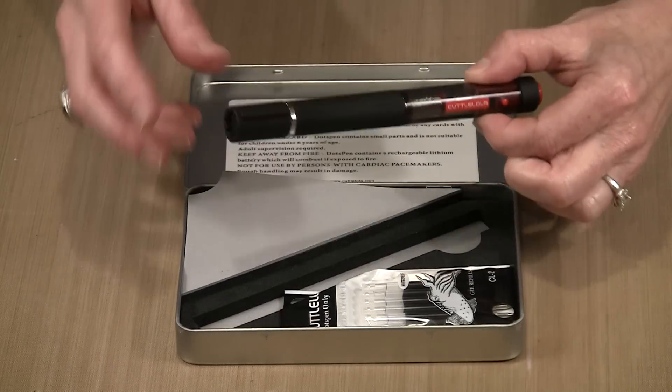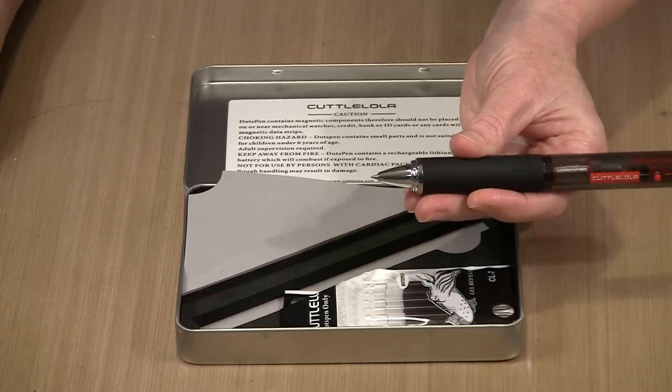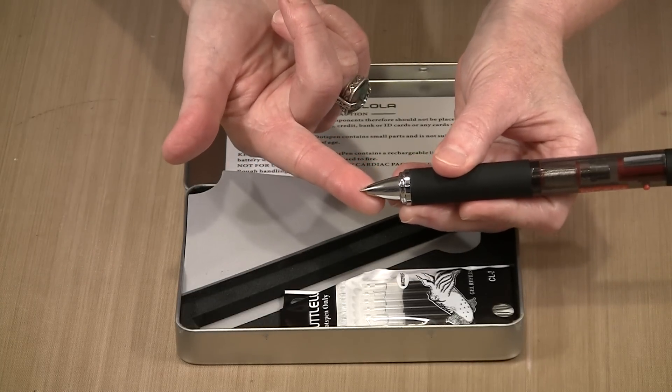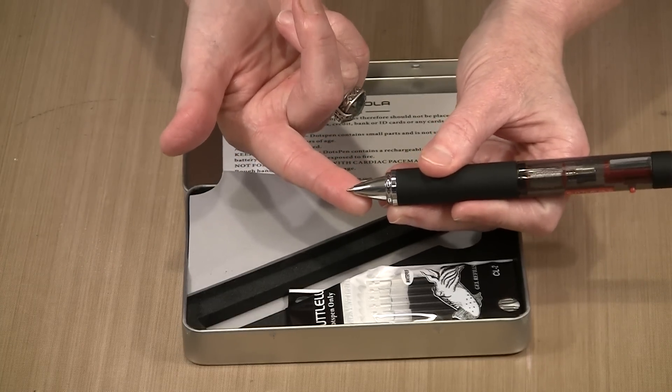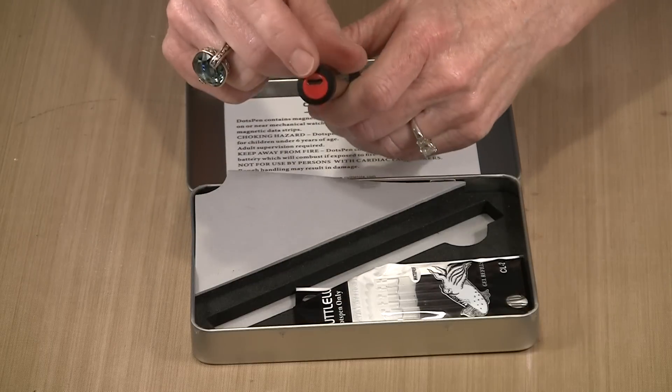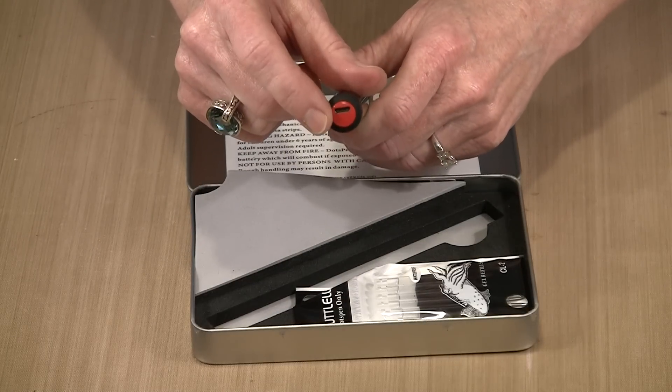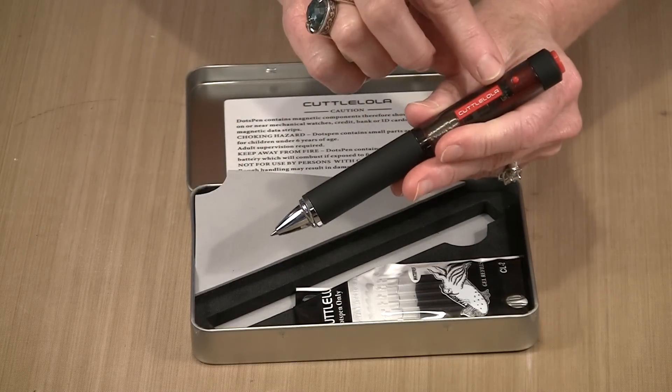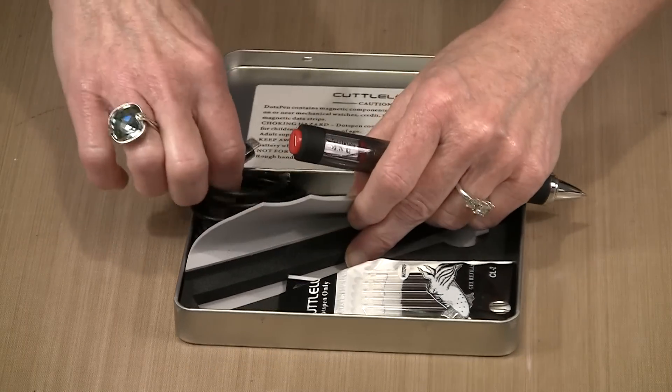So this is the pen. If you take off this protective cap on the end, you'll find the pen tip, the regular part that you would expect to see. Up here you're going to see where you plug the charger in, and then there's this on-off button. So let's talk about the charging.